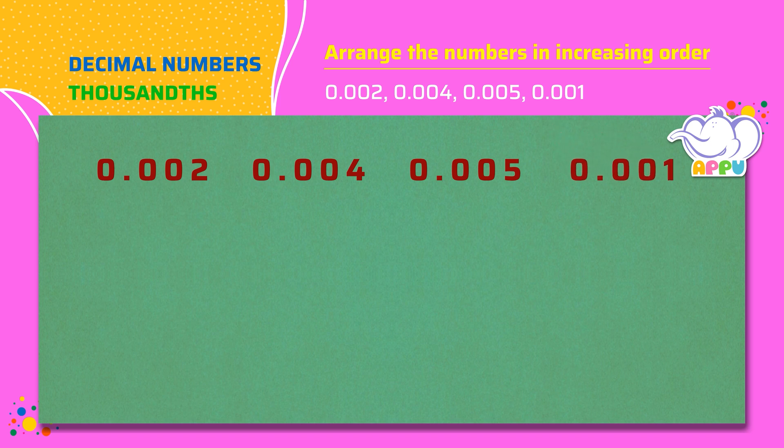We compare the ones place. All the numbers are zero. We compare the tenths place. All the numbers are zero. We compare the hundreds place. All the numbers are zero.